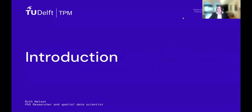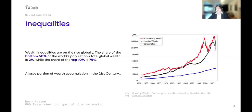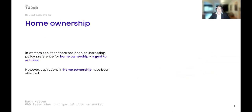Wealth inequalities are on the rise globally. The share of the bottom 50% of the world's population's total global wealth is 2%, while the share of the top 10% is 76%. A large portion of wealth accumulation in the 20th and 21st century can be attributed to capital gains through housing. In western societies there's been an increasing policy preference for home ownership — it's a goal to achieve, something you can pass on to your children, a safety net especially in old age.